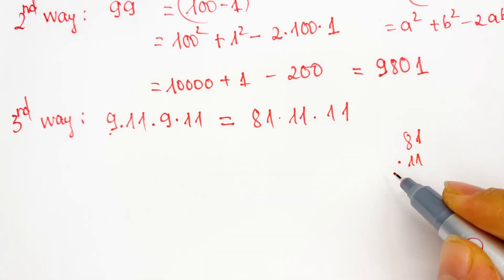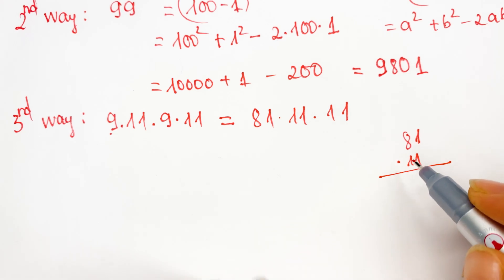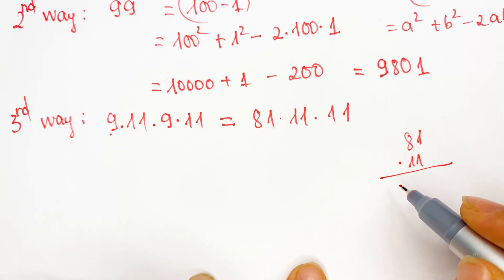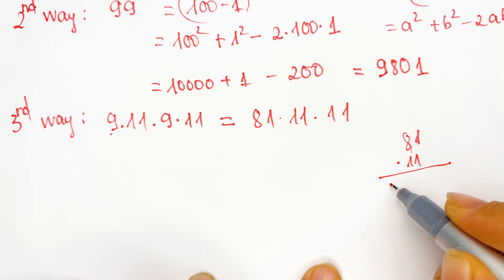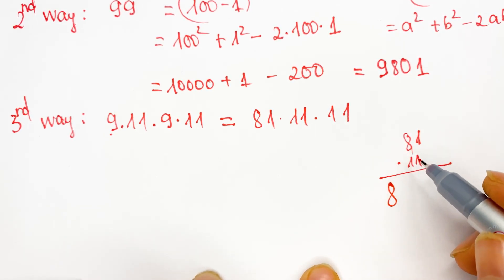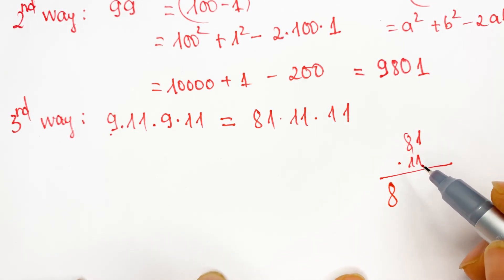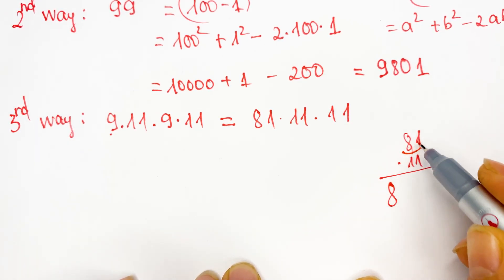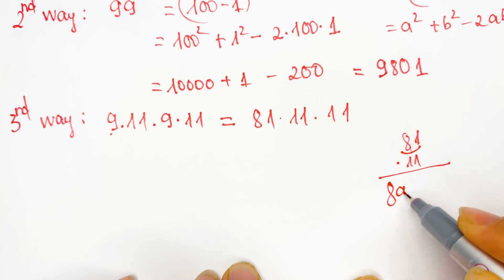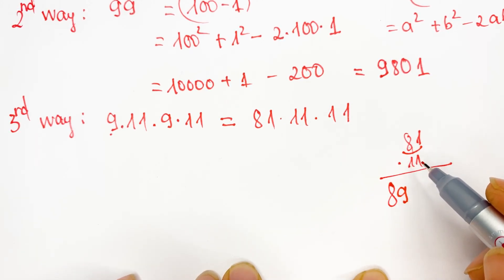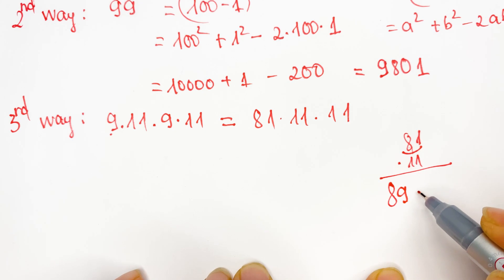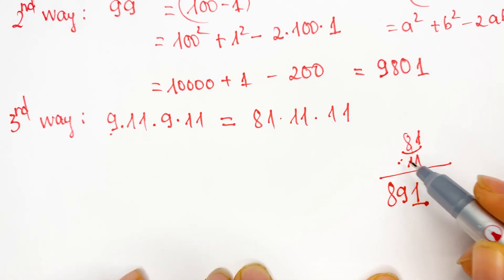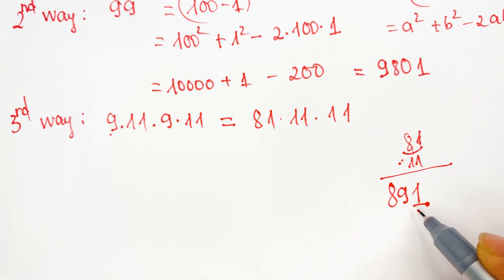So for multiplying by 11: firstly, you copy the first digit of the number. And then you add the two digits together — 8 plus 1 equals 9. And then you copy the last digit, which is 1. So 81 times 11 is equal to 891.